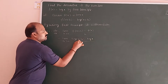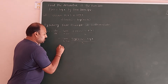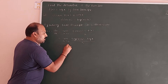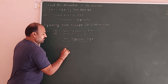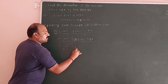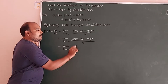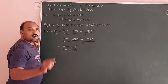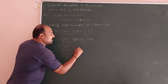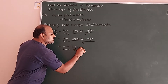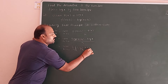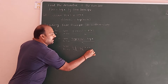This is in the form log(a) minus log(b), which equals log(a/b). So we can write it as: limit h→0 of (1/h) · log[(x+h)/x].